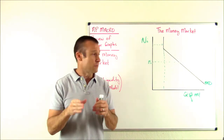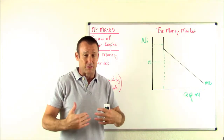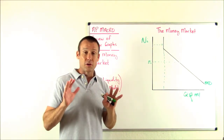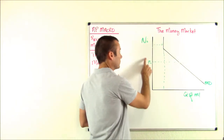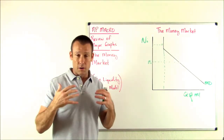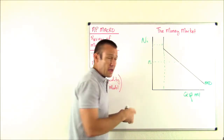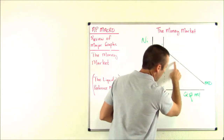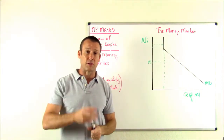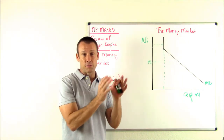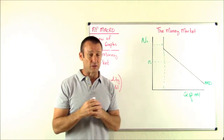The key thing about asset demand for money is its downward slope — it is sensitive to the nominal interest rate. If the nominal interest rate goes up, we're going to hold less of our wealth in liquid form because the cost of doing so is rising. If the nominal interest rate goes down, the cost of holding your wealth in liquid form is going down, so you'll hold more of your wealth in liquid form. So there are two components: transaction demand and asset demand for money.